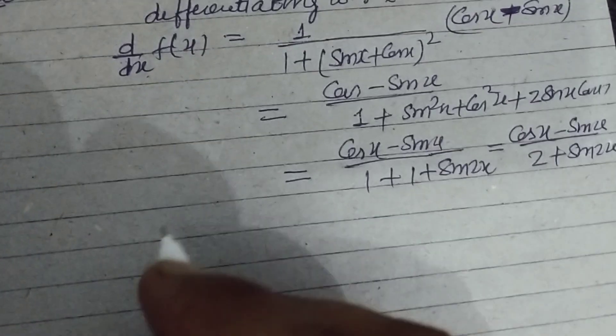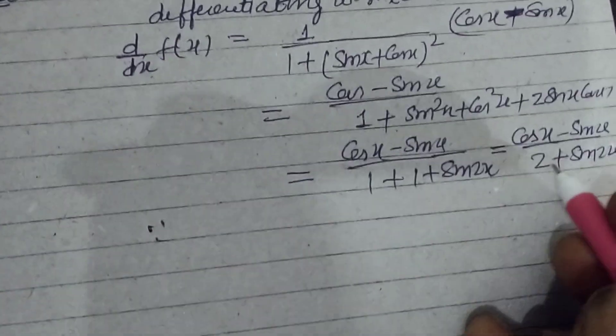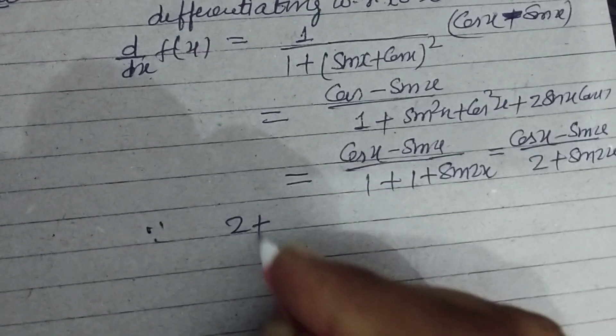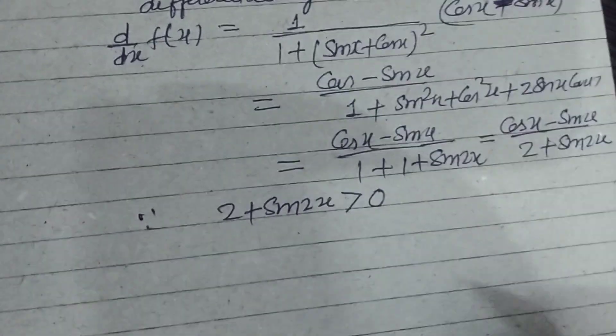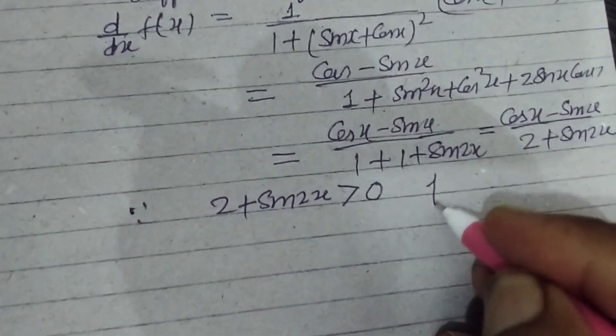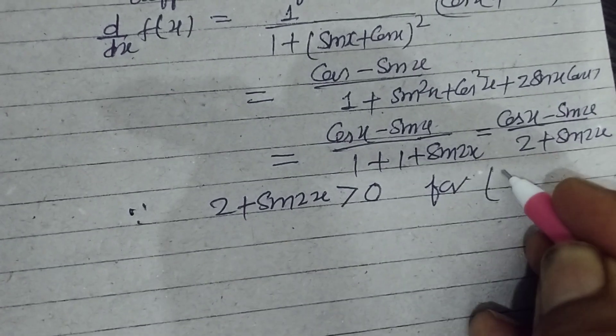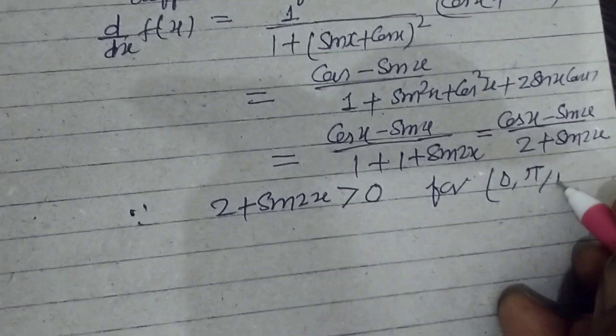Here, since the denominator 2 + sin 2x is always greater than 0 for the interval [0, π/4].